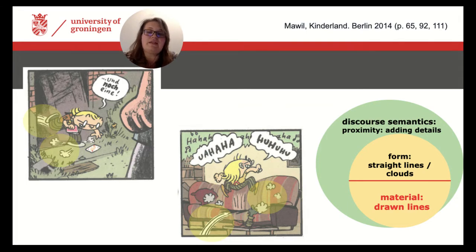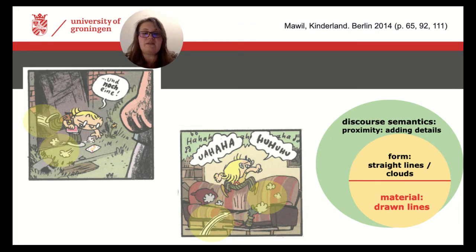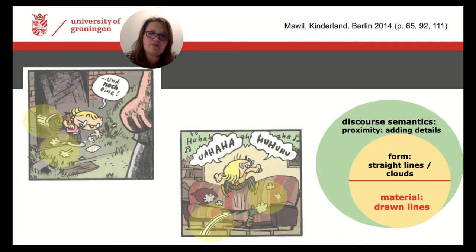On the basis of this small analysis, it can be hypothesized that these motion lines and cloud elements can be seen as semiotic modes within this graphic novel, and probably also within other graphic novels or visual narratives. By describing the patterns of their use and giving an interpretation scheme, we make available the discourse semantics of these modes. It is important that this analysis is a hypothesis on the basis of qualitative analysis that always needs empirical testing to be verified — we would need to analyze more occurrences in Kinderland and in several different graphic novels.